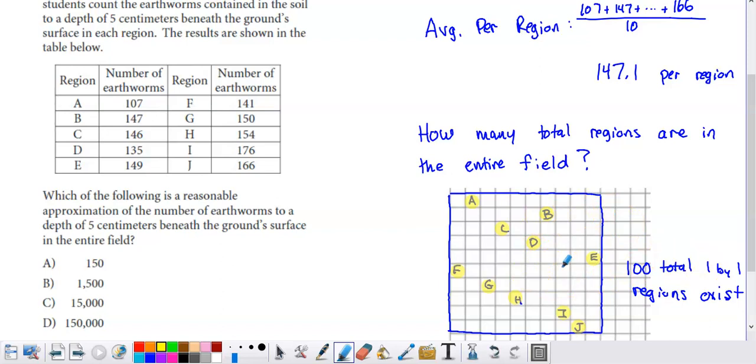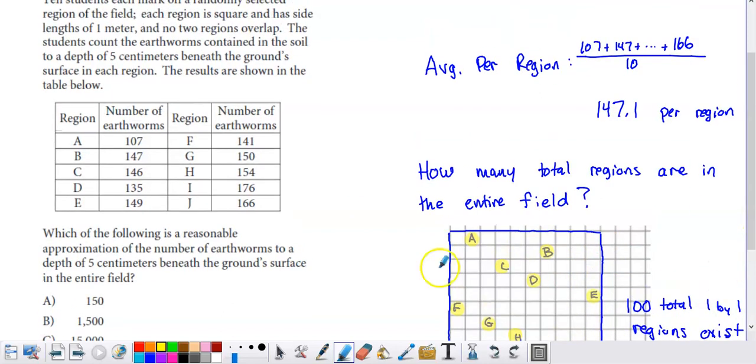So we're basically covering 10% of the overall field through this analysis. But what we can do is we can find the average of these 10 random regions. So the average of the 10 random regions would be adding up the total number of earthworms. So 107 plus 147 plus all of these values, add all those up, figure out the total number of earthworms that they found in this 10% of the field, divide by 10 and you get 147.1 earthworms per one by one region of the field on average.